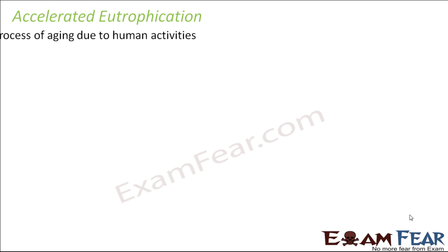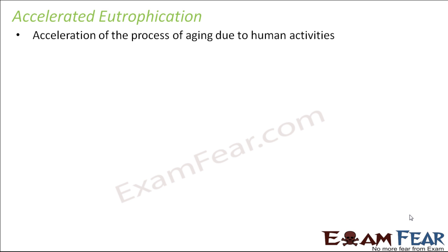Accelerated eutrophication is the acceleration of the process of aging due to human activities. Accelerated means to increase the speed of something — so here, to increase the speed of aging of the lakes. That is called accelerated eutrophication and it happens due to human activities.